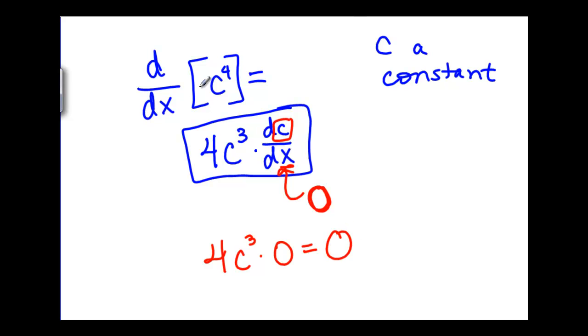We can use this idea of a chain rule, an inside function, and an outside function whenever we have different letters no matter what that relationship is between those letters.